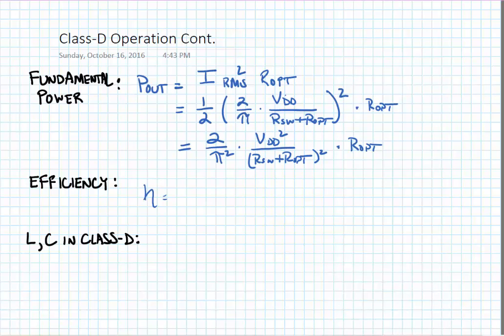Our drain efficiency is equal to our output power divided by our DC power. And we find that the drain efficiency is equal to the voltage division ratio between the switch resistance and the optimum termination resistance. Of course, if the switch resistance is zero, in other words, the switch is ideal, the drain efficiency is 100%.